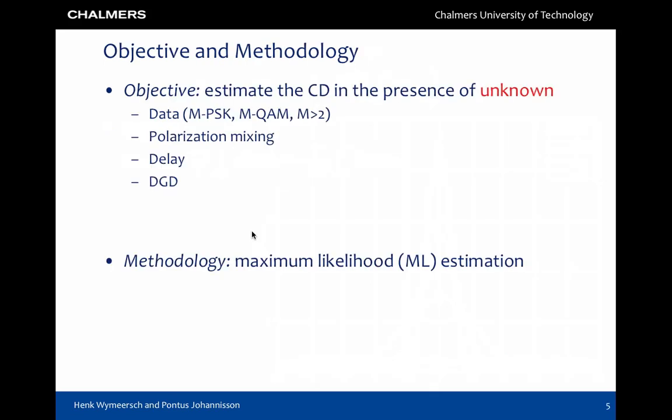To summarize, our objective is to determine eta, treating all other unknown parameters in the system as nuisance parameters. These parameters include the data, the mixing matrices, the differential group delay, and the propagation delay. To achieve this objective, we resort to maximum likelihood estimation.